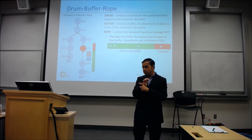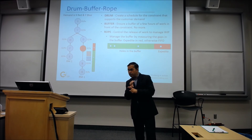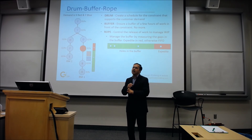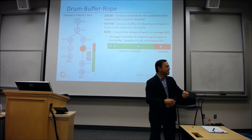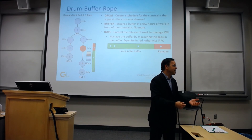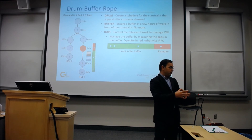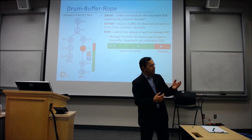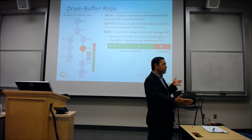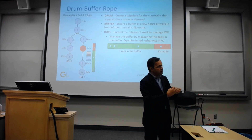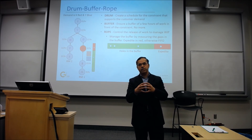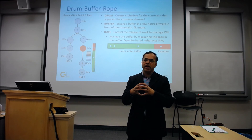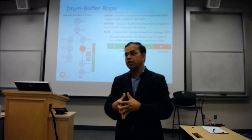Now we know there is uncertainty — the customer is involved, we may sometimes miss it, sometimes not. To deal with that uncertainty, we may add some buffer. This is where the three concepts come together: drum, buffer, and rope. Together, these give us a practical mechanism to operate a shop floor.